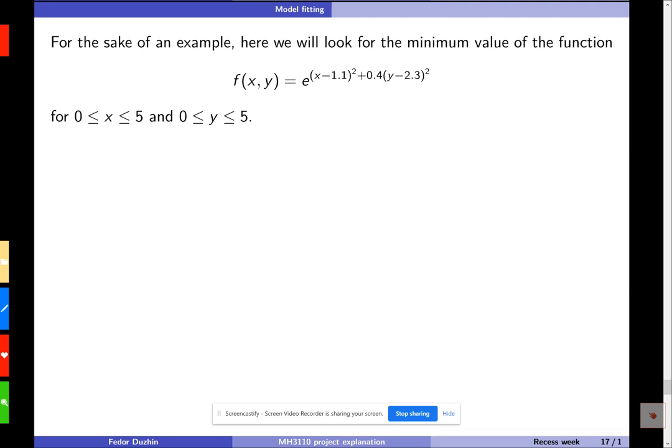So for the sake of this example, I'm going to find the minimum value of this function, which is very easy to find just by observation, right? So because the exponent here is the sum of squares, and of course, it is minimized when all the squares are just zeros. So we know that the actual answer is x is 1.1, and y is 2.3.